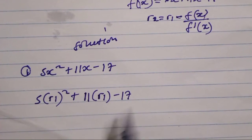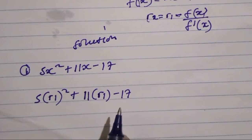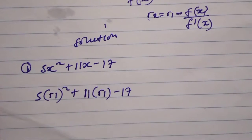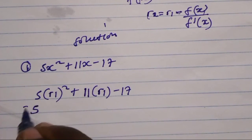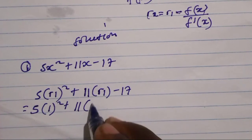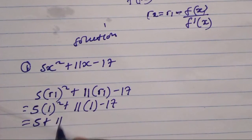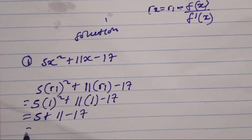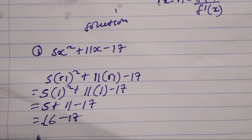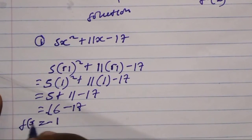r1 stands for the first approximation and r2 from this formula stands for the better approximation. Let's approximate here. We have 1, so 5 open brackets 1 squared plus 11 open bracket 1 minus 17. 1 squared is 1, 1 times 5 which is 5, plus 11 times 1 which is 11, minus 17. Then 5 plus 11 we have 16 minus 17, then 16 minus 17 is minus 1. So this is our function which we have here.